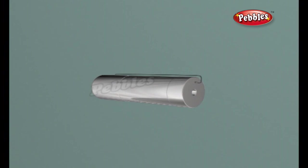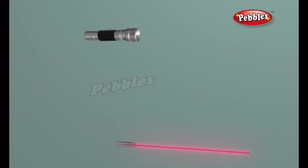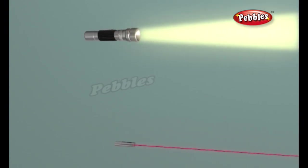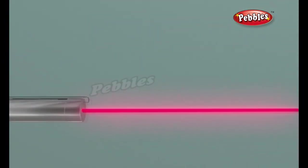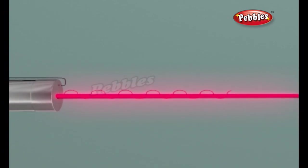Laser light has the following properties. The light released is monochromatic — it contains one specific wavelength of light. The wavelength is determined by the amount of energy released when the electron drops to a lower orbit. The light released is also coherent — it is organized, and each photon moves in step with the others.